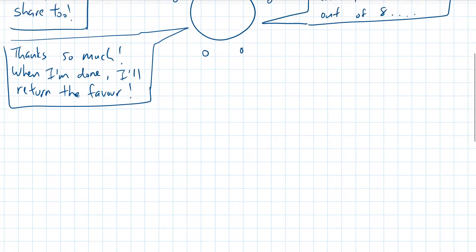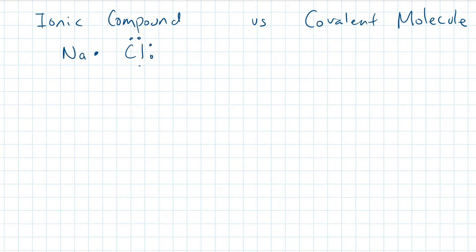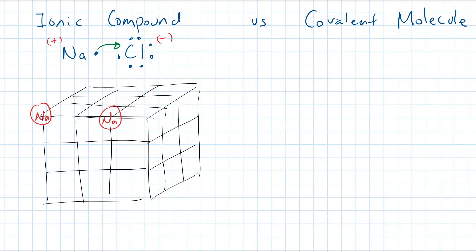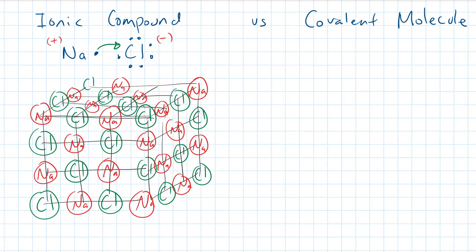Let's compare the differences between a covalent bond and an ionic bond. Ionic bonds are formed when electrons are taken from metals and received by nonmetals. Since there is a charge imbalance between the metals and nonmetals, they usually stick together in ginormous chunks and form big crystalline structures, like in table salt.